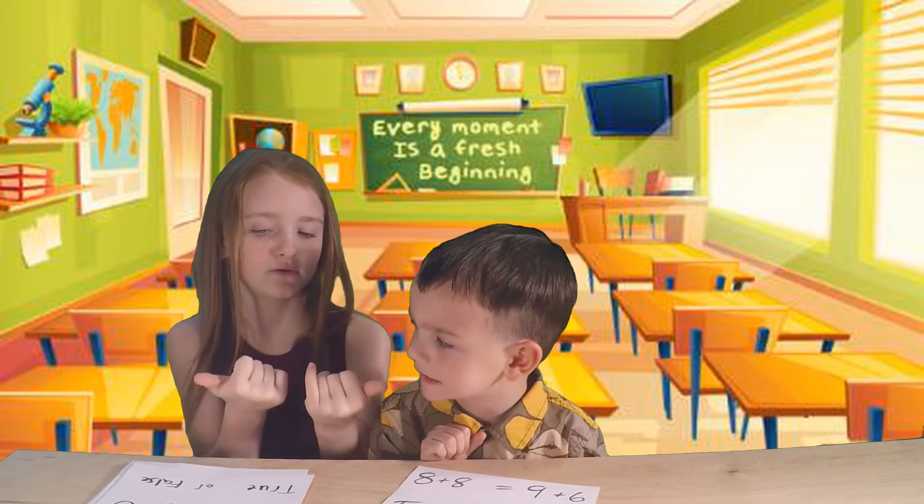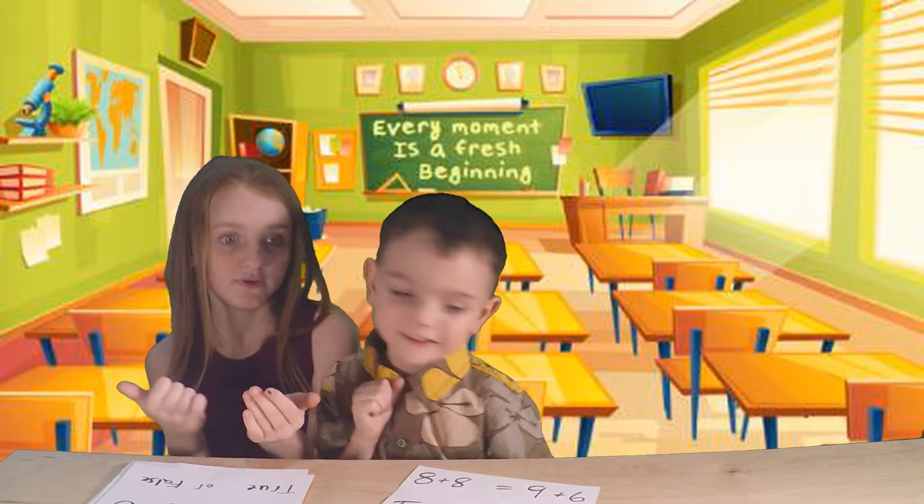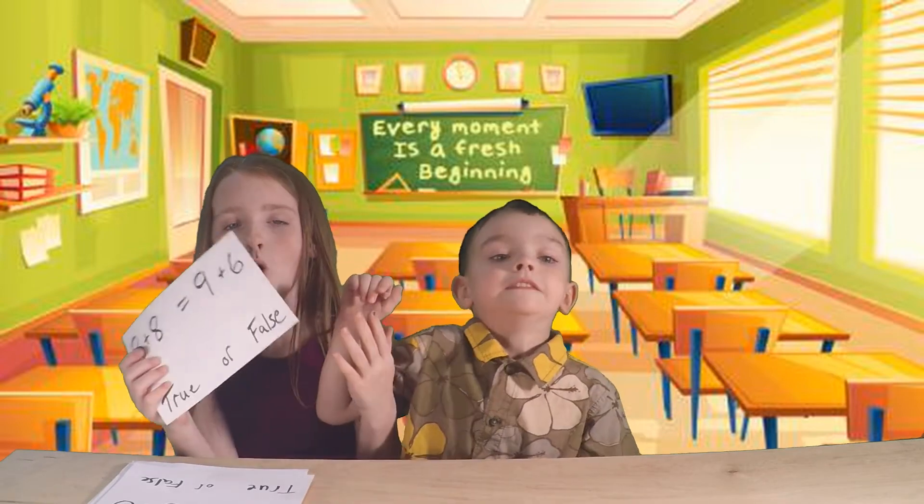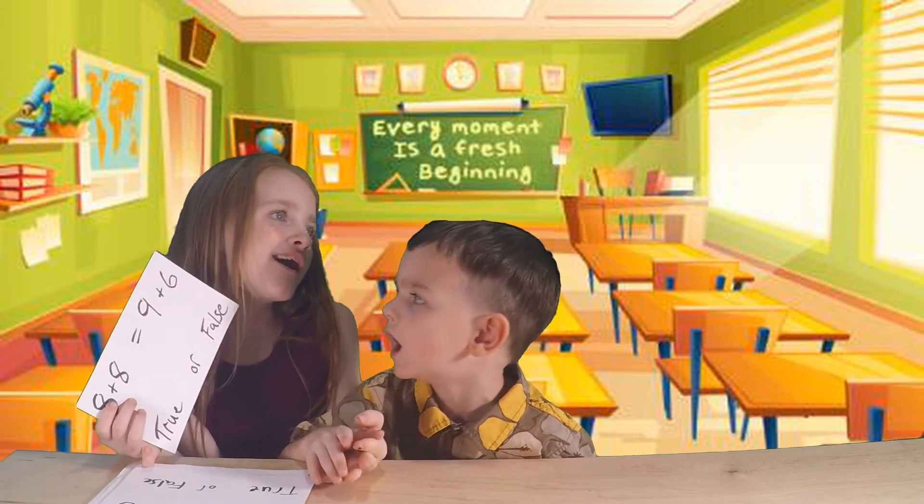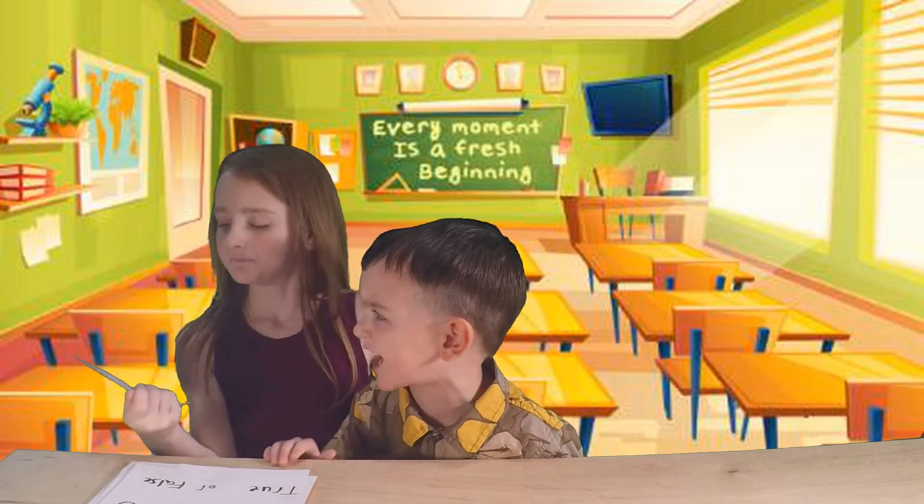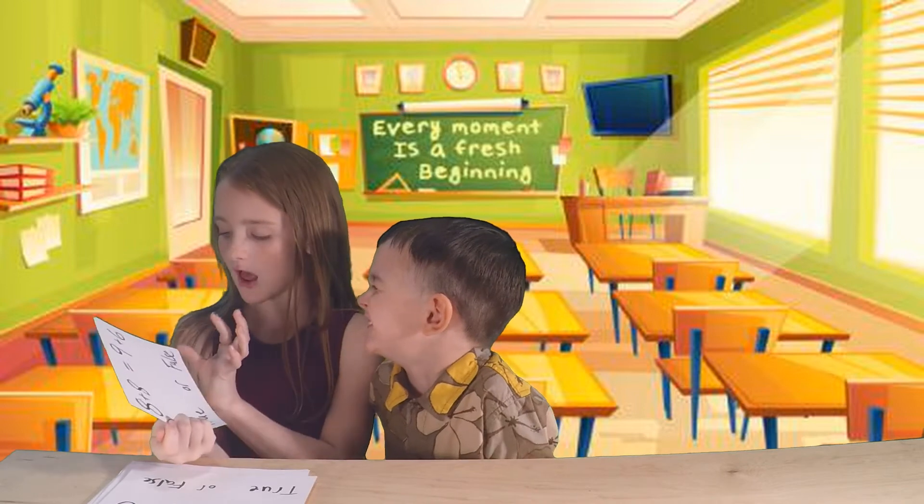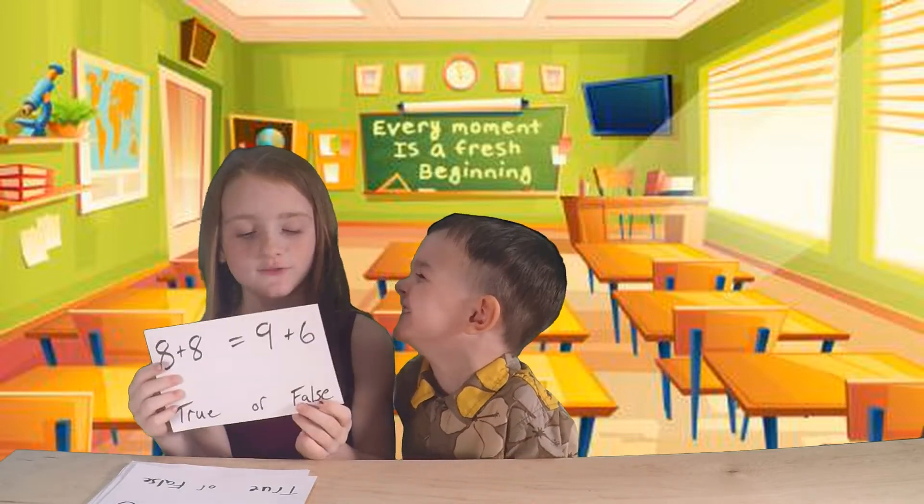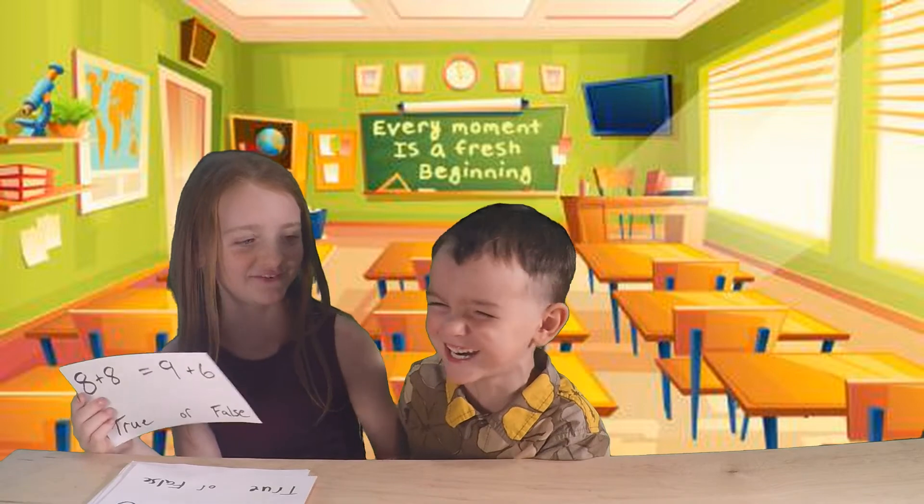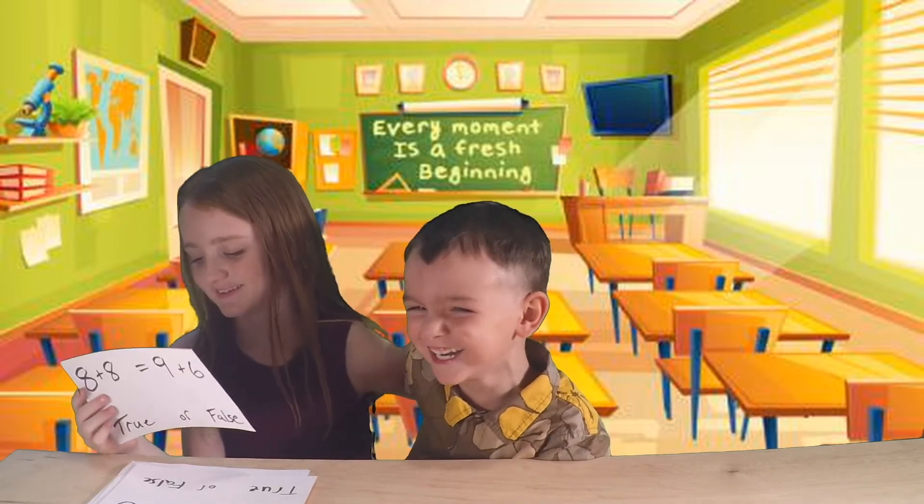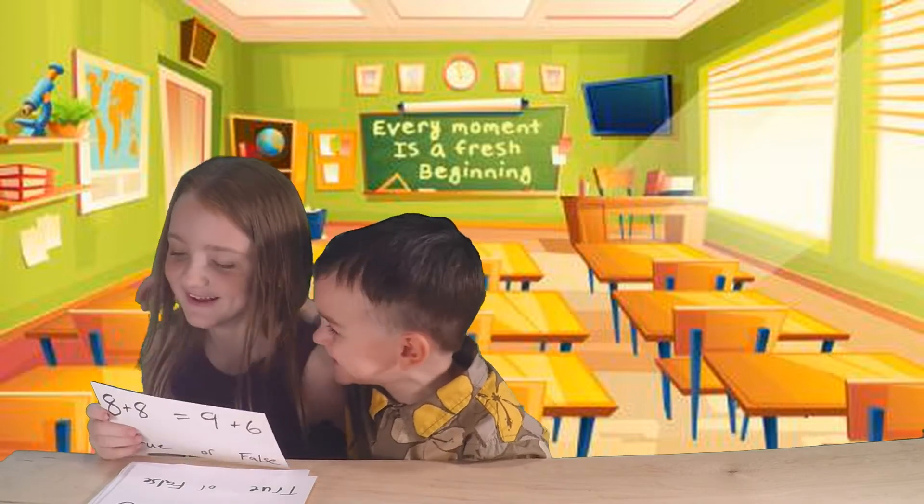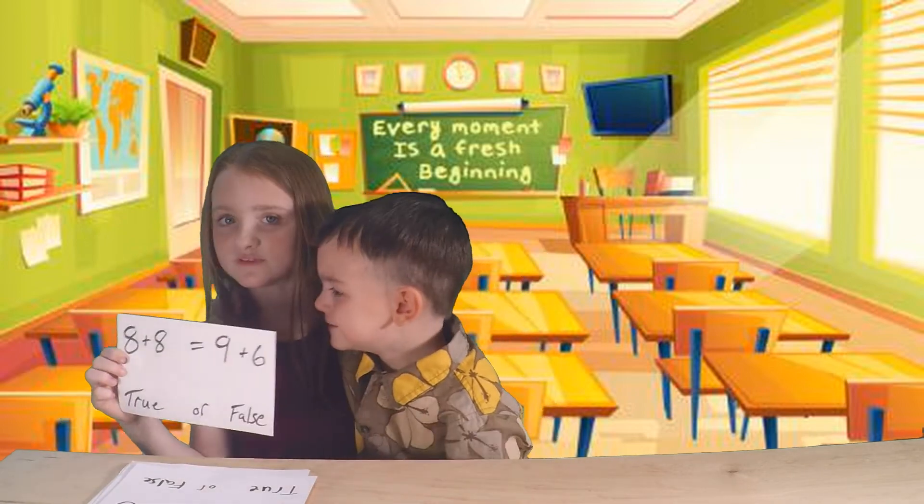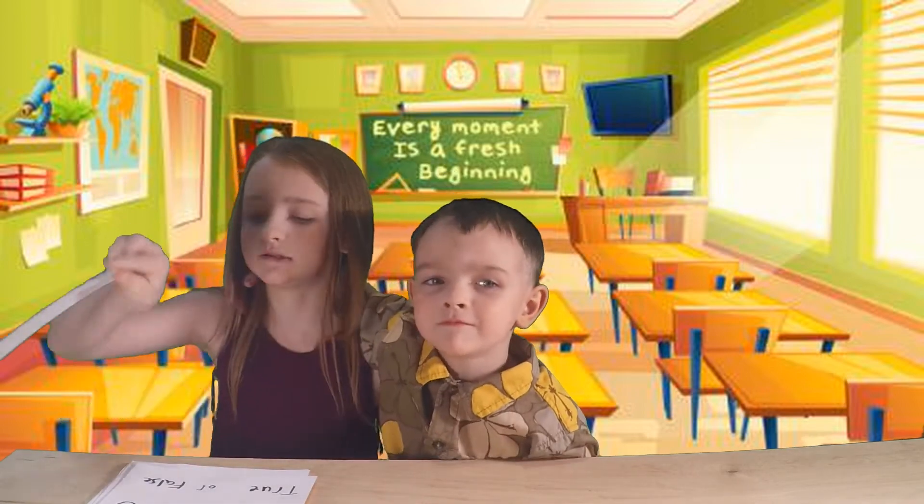And then nine plus six is ten, then eleven, twelve, thirteen, fourteen, fifteen. So they do not equal the same thing, so we're going to put them upside down because it's false.